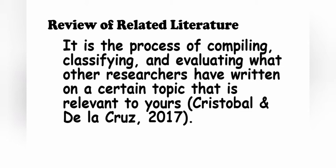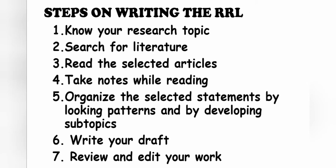Now that you already know what a review of related literature is, let us move on to the steps on writing it. Step 1: Know your research topic. Step 2: Search for literature. Step 3: Read the selected articles. Step 4: Take notes while reading. Step 5: Organize the selected statements by looking for patterns and by developing subtopics. Step 6: Write your draft. Step 7: Review and edit your work.